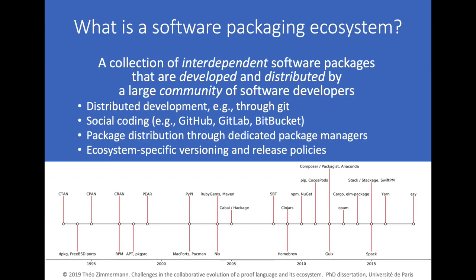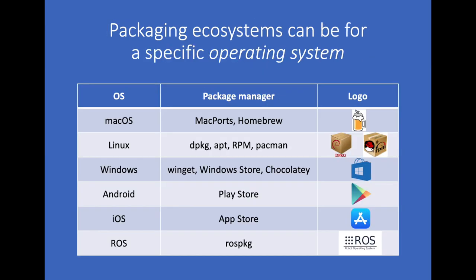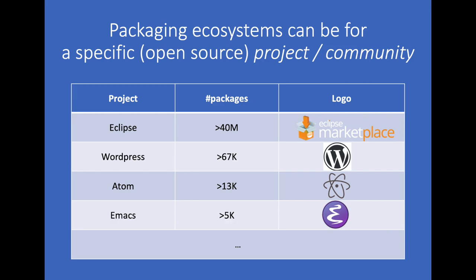Here you can see a picture from Theo Zimmermann's PhD thesis in 2019 showing an overview of the evolution over time of many different types of packaging ecosystems. It's a quite well-known phenomenon, and today basically for any operating system, you will have packaging ecosystems available with their specific package managers. Even for specific dedicated software projects or communities, there are packaging ecosystems available — for example, plugins in the Eclipse marketplace, WordPress, Atom, Emacs, and many others.